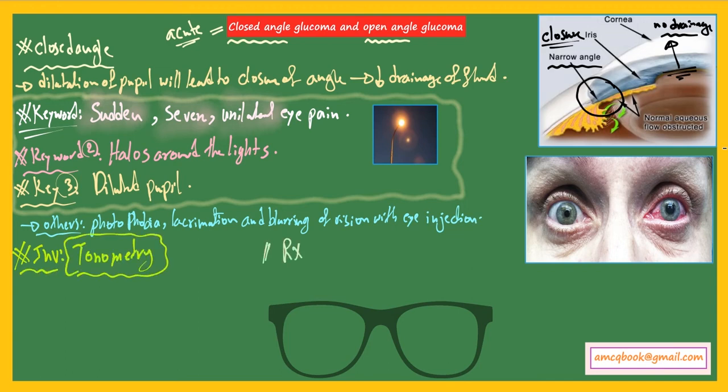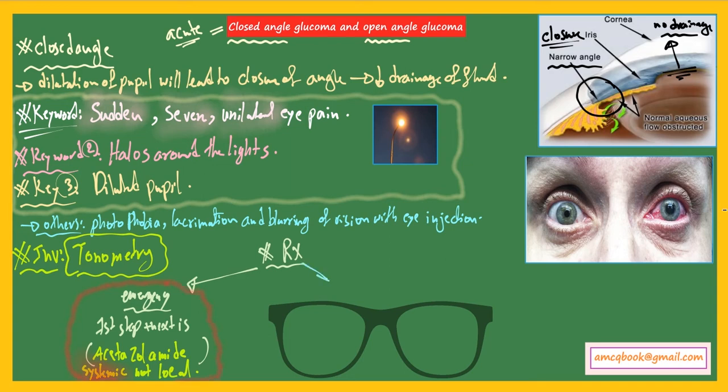In case of emergency with acute pain, the immediate treatment or first step is acetazolamide systemic, not local. Systemic acetazolamide is the emergency treatment for closed angle glaucoma.